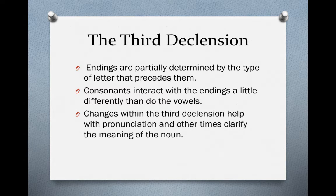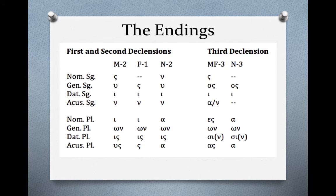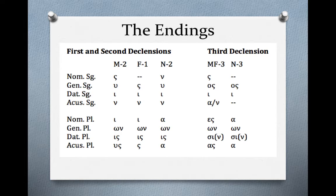Changes within the third declension help with pronunciation, and other times they clarify the meaning of the noun. We need to have the first and second declension endings memorized — without that, parsing and translation will be slow going. But if we can get those memorized, that is the first step toward parsing and translating efficiently. Now we're going to work on memorizing these third declension endings, and this week we should get these memorized as much as possible.